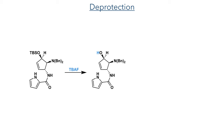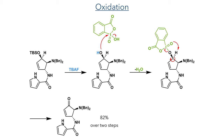Taking this compound forward, the TBS group was then deprotected using TBAF and the newly formed hydroxyl group was then oxidised using IBX. This reacts similarly to Dess–Martin periodinane, where the iodine centre is attacked by the hydroxyl group and then eliminates an equivalent of hydroxide. An intramolecular hydrogen abstraction then occurs, forming the target ketone.